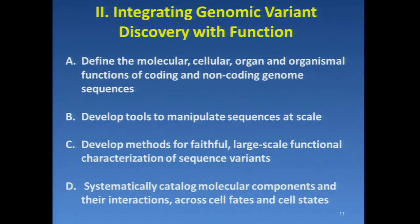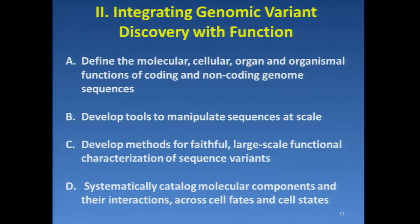The second large area of discussion was integrating genomic variant discovery with function. Several topics: to define the molecular, cellular, organ, and organismal functions of coding and non-coding genome sequences; to develop tools to manipulate sequences at scale; to develop methods for faithful large-scale functional characterization of sequence variants; and to systematically catalog molecular components and their interactions across cell fates and cell states. A recurring question was whether the best approach is to develop assays and wait for variants to be implicated and then follow up, or to build catalogs of systematically developed functional information in advance — and both approaches were recognized as important.